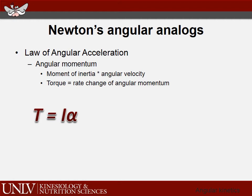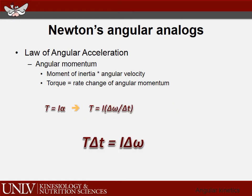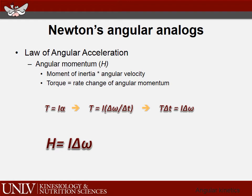Let me derive this: Torque equals I times alpha, and alpha is delta omega over delta t — the change in angular velocity over change in time. Rearranging, bringing delta t to the left-hand side gives torque times delta t. On the right-hand side you have moment of inertia times delta omega — that is the angular momentum component, analogous to mass times velocity in linear motion. Bringing delta t back to the right-hand side: torque equals change in angular momentum over change in time. That's another way to look at the torque and the angular momentum relationship.